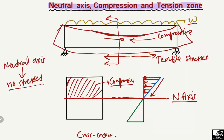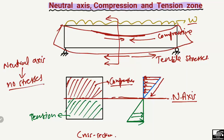After the neutral axis, the tensile stresses will increase. The bottom portion of the beam below the neutral axis will be entirely in tension. The maximum tensile stresses will be at the extreme bottom of the beam. So here we have maximum tensile stresses at the bottom and maximum compressive stresses at the top, and with depth the tensile stresses decrease toward the neutral axis.